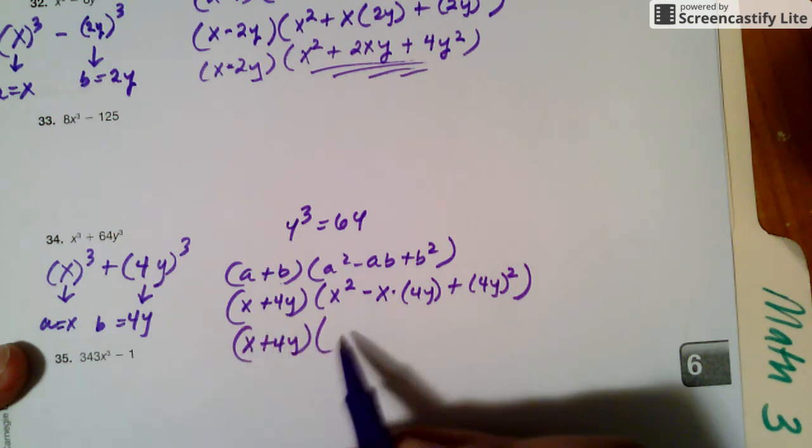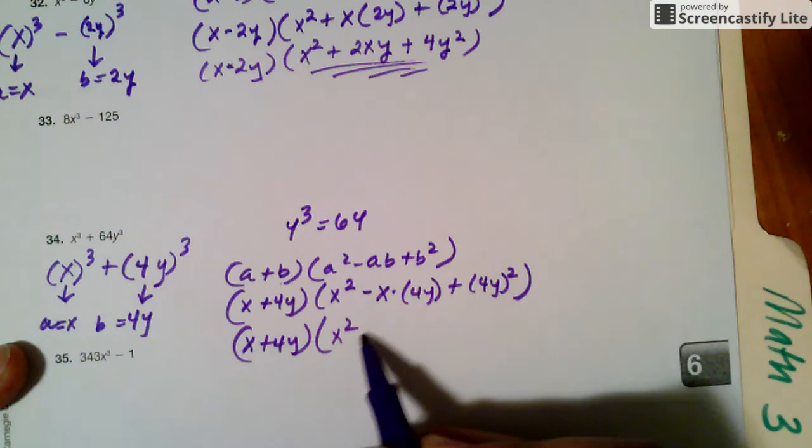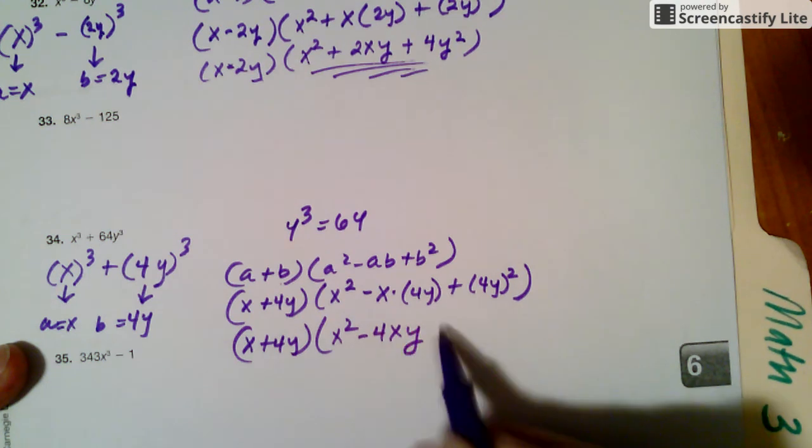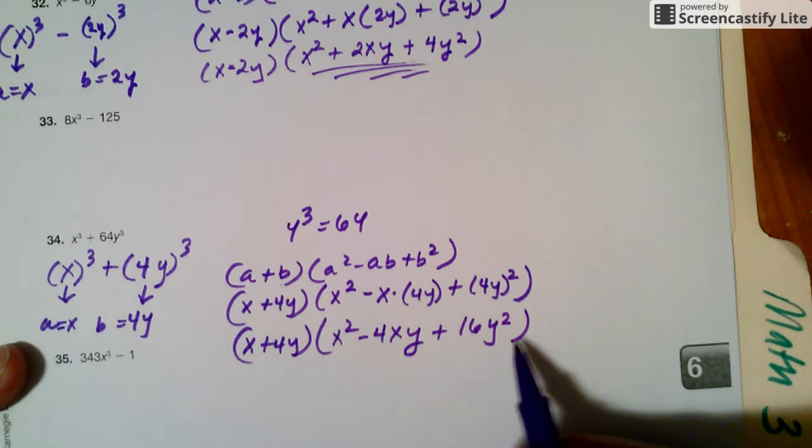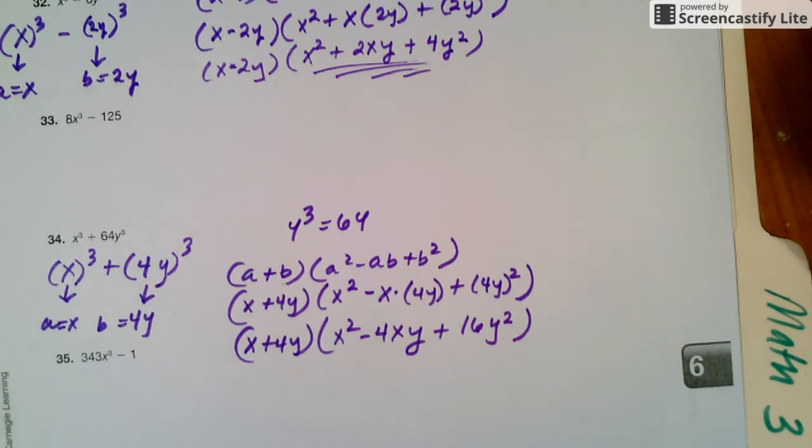So you want to clean everything up. x plus 4y, x square, and then this is going to be negative 4xy, and then this is 4 square, which is 16, and then y square, which is y square.